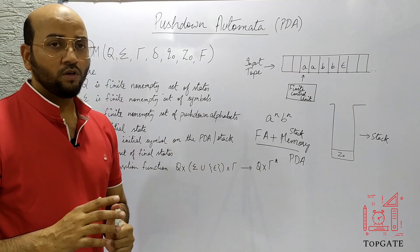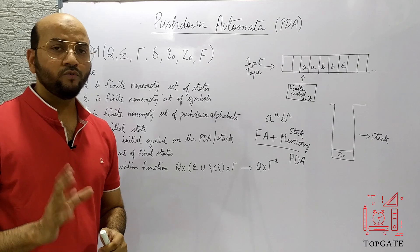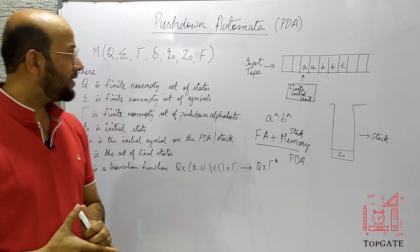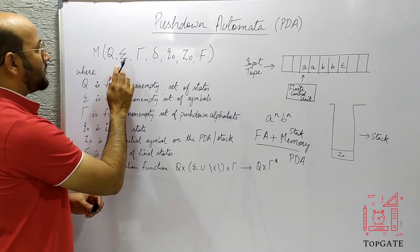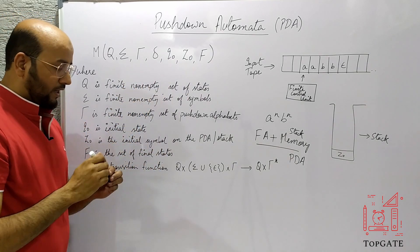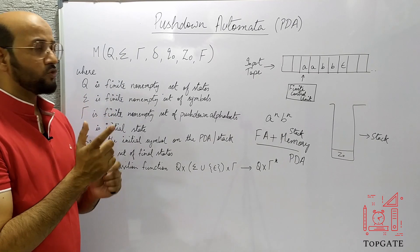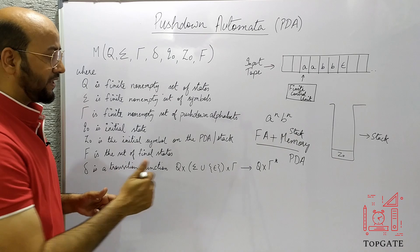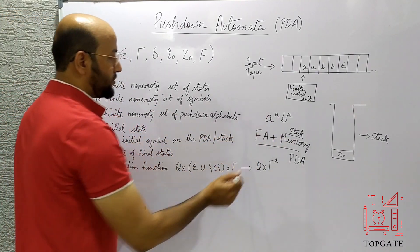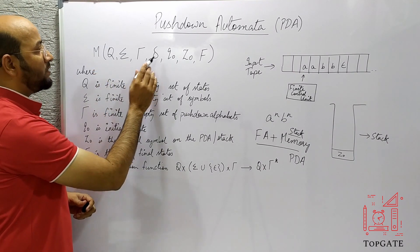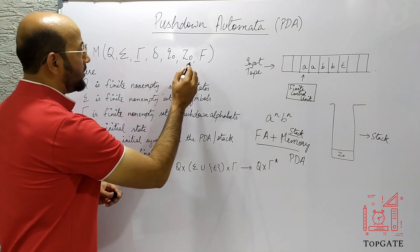So what is a PDA? In automata, whatever machines we study, we represent them in the form of tuples. In finite automata there were five tuples: Q, sigma, delta, Q naught, and F. Similarly, in PDA we have seven tuples: Q, sigma, tau, delta, Q naught, Z naught, and F. Since PDA is a combination of finite automata plus memory, we have the same five tuples from finite automata plus two new tuples — tau and Z naught — which are related to the stack.